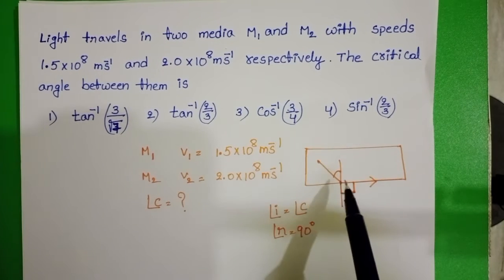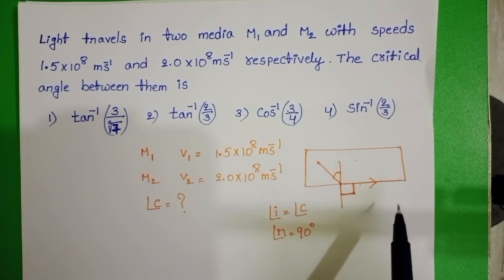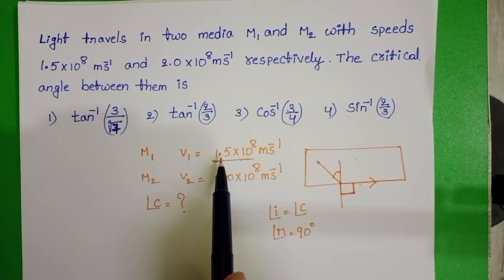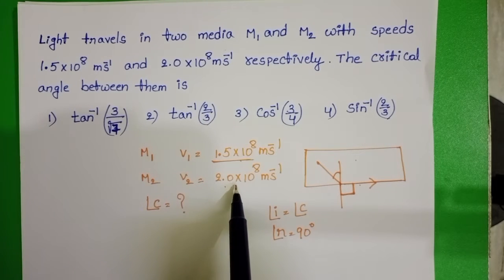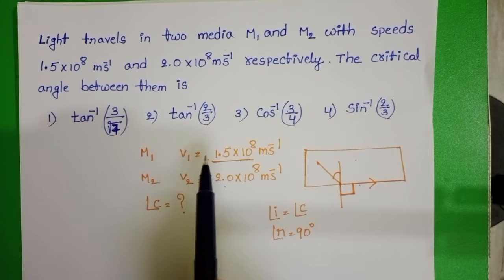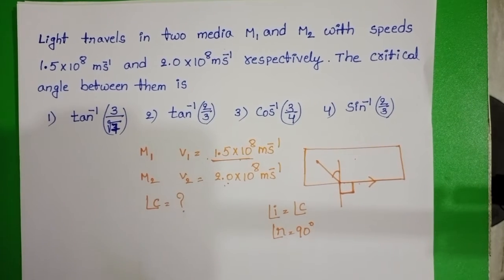The condition is when light ray travels from denser medium to the rarer medium. Speed of light in first medium is less than the speed of light in second medium. So first medium behaves like denser medium and second medium is rarer medium.